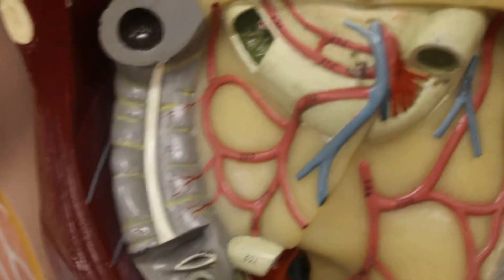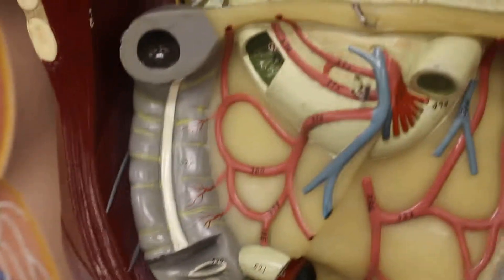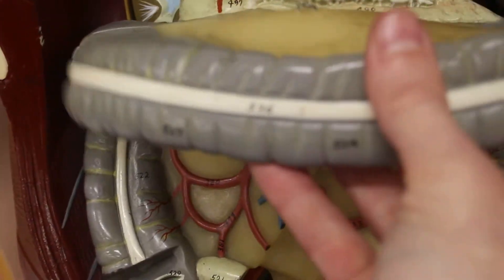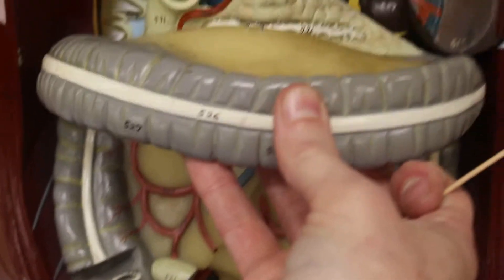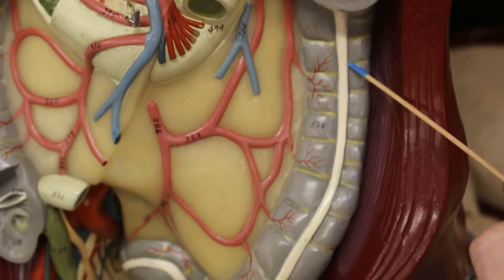Oh, I'm sorry. I lied. Here is the ascending colon. This here is the transverse colon which then leads to the descending colon.